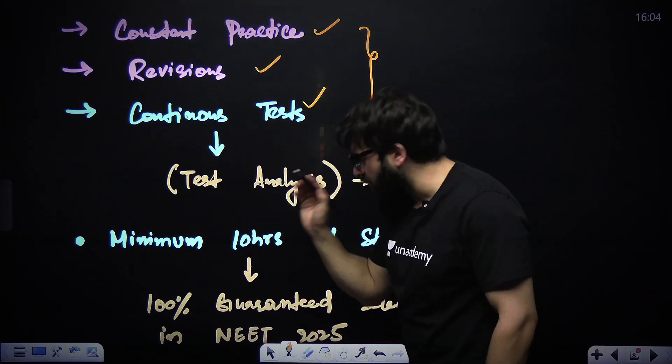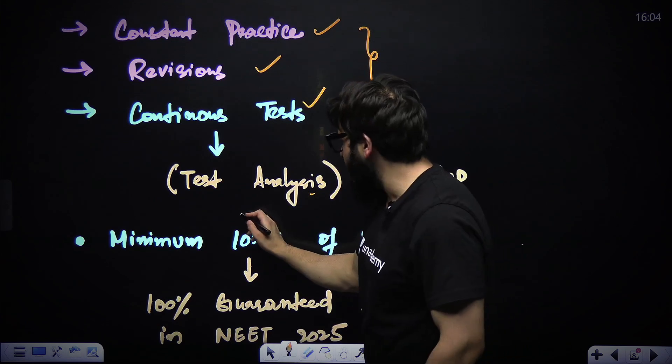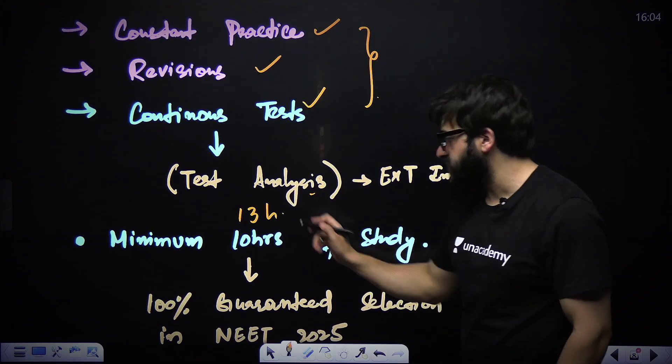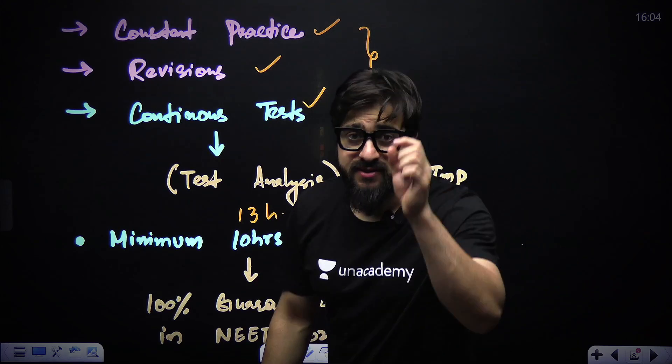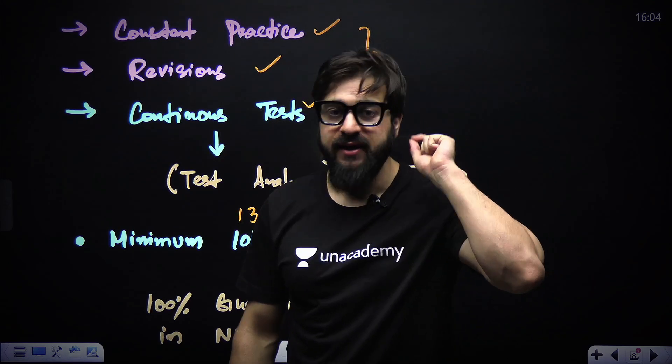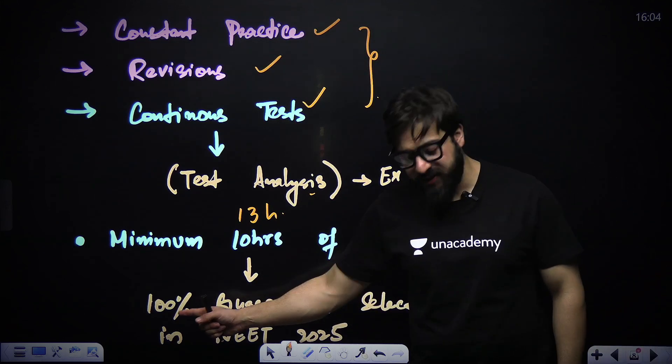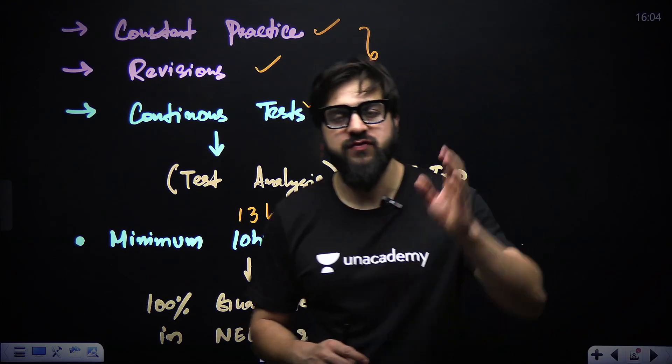And we say minimum, I won't say 10 hours, I'll keep it over here, that is 13 hours. 13 hours of study is mandatory and you have to be extremely consistent. Consistency is the key. 100% is the guaranteed selection if you do all of this for NEET 2025. There is 100% guarantee that you'll basically enter the medical college.